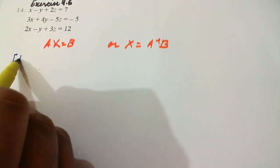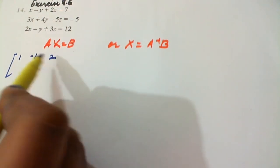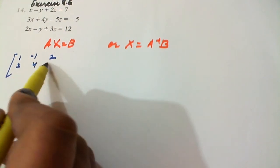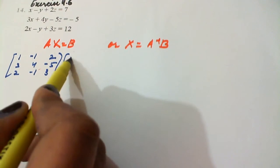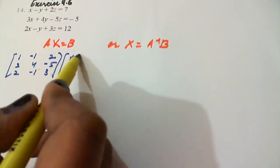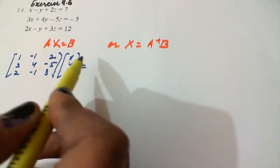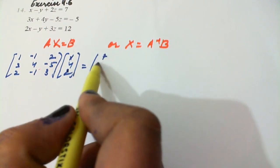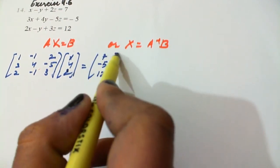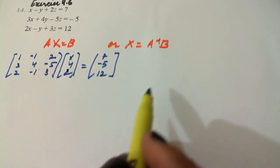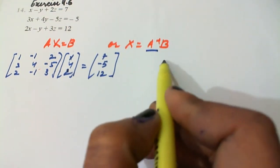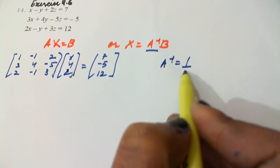We can write Ax equals to B as 1, -1, 2; 3, 4, -5; and 2, -1, 3 into xyz equals to 7, -5, and 12. So first of all we will find A inverse, and we have A inverse as 1 upon determinant A into adjoint A.